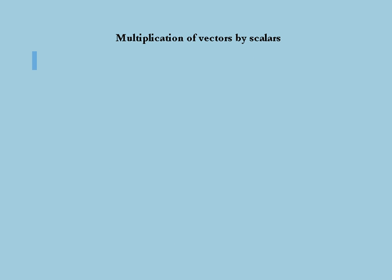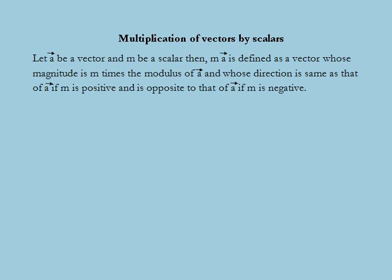Next we are going to discuss the multiplication of vectors by scalars. Let us consider a vector a and a scalar m, which is a real number. Then m into vector a is defined as the vector whose magnitude is m times the modulus of vector a, and whose direction is the same as that of vector a if m is positive, and opposite to that of vector a if m is negative.